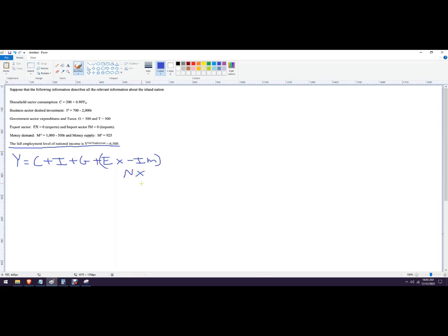Current Y is going to be C plus I plus G plus the value of exports minus imports. You might be familiar with this formula already because it's basically the GDP formula. GDP is another way of expressing aggregate output or aggregate income. This level right here is net exports. In this case, the value of the exports are zero and the value of the imports is zero. So we don't really have to worry about that.